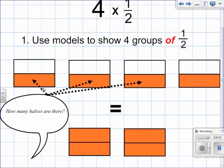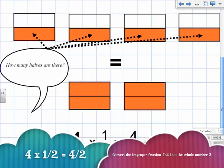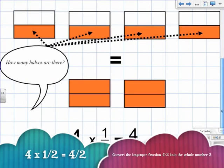Or if you simply add them, one-half plus two-halves plus three-halves plus four-halves, four-halves is equivalent to two wholes. So four times one-half equals four divided by two.